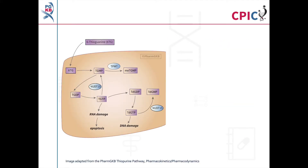This image is a simplified version of the PharmGKB thiopurine pathway; a link to the original pathway is provided in the description below this video. Thioguanine is used to treat a number of malignant and non-malignant diseases. It is metabolized in cells to form active thioguanine nucleotide metabolites.